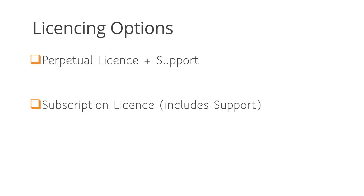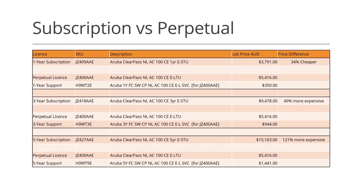You can purchase licenses on a subscription or a perpetual model. This table represents a 1, 3, and 5-year license term for 100 Access licenses in both subscription and perpetual models. Pricing shown is the list price in Australian dollars current as of April 2022. In our experience, for usage terms of two years or longer, perpetual licensing generally works out to be more cost effective, and even more so the longer the term.